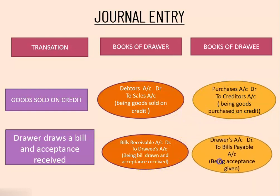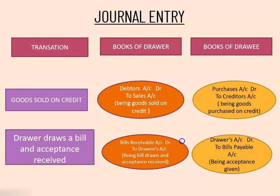In the books of drawee, drawer's account is debited to bills payable account — because bills payable is a liability. The entry is drawee's account debited to bills payable account — being acceptance given. In this case, the drawee has accepted and returned the bill to the drawer.